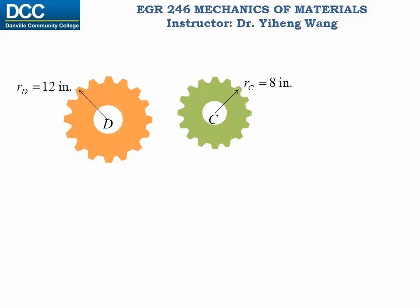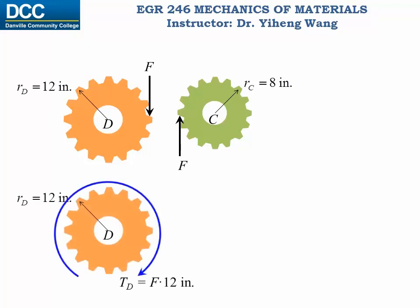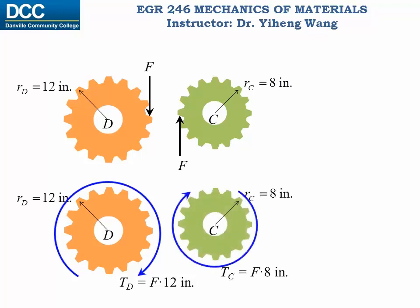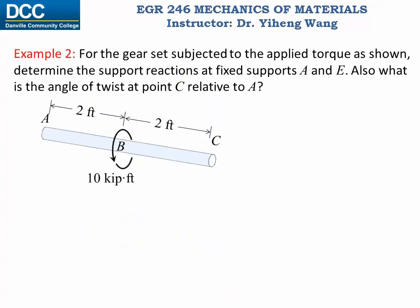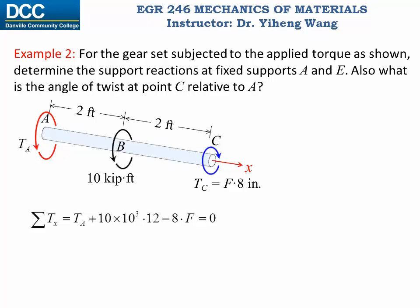For the equilibrium equation, the forces at the contact point between gears are action-reaction pairs with the same magnitude F. This force F causes a moment of F × 12 inches about gear D (12 inches being the radius of gear D), and F × 8 inches about gear C (8 inches being the radius of gear C). Drawing the free body diagram of shaft AC, we draw TA at the fixed support, the torque on gear C, write the equilibrium equation in pound-inch units, and solve TA as an expression of F.